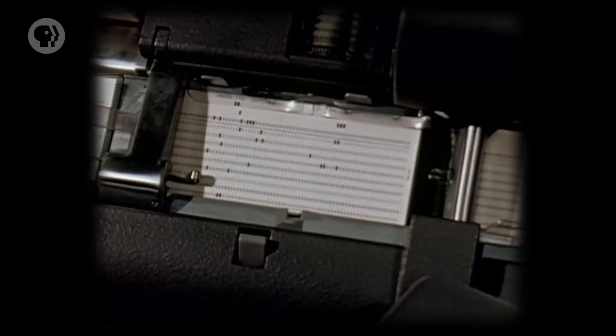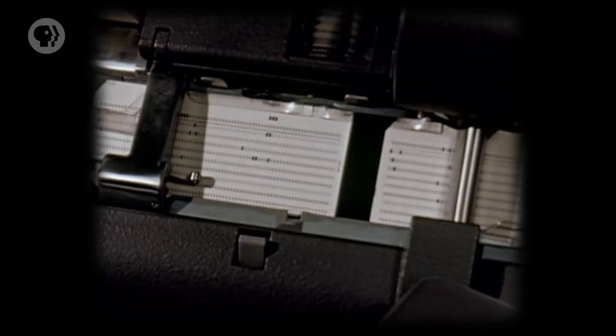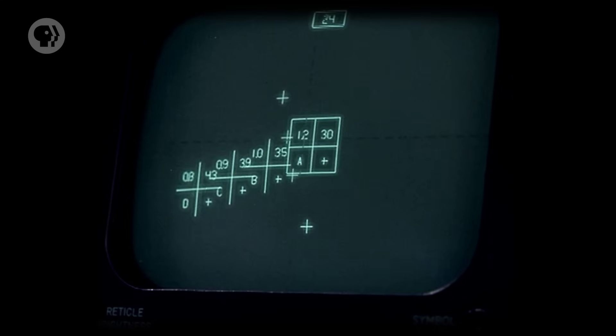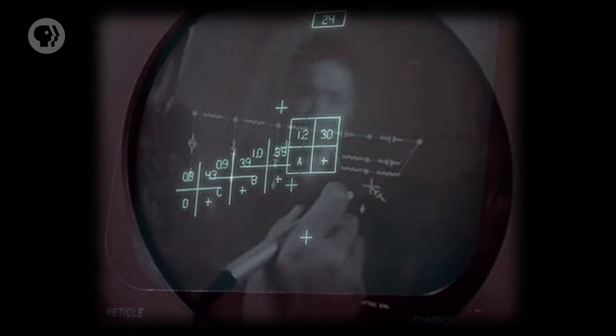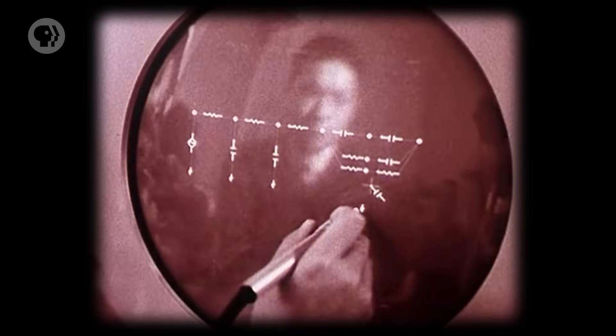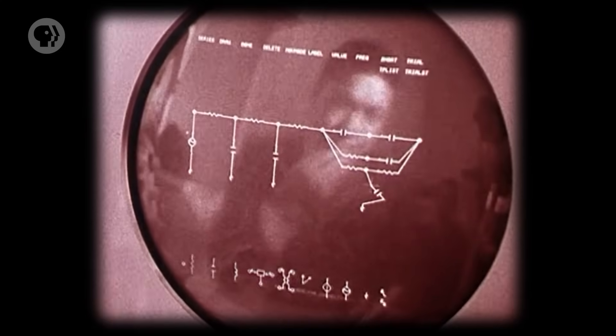Computer screens were rarely considered for program output — instead, any results from a computation were typically written to paper, or some other more permanent medium. But screens were so darn useful that by the early 1960s, people started to use them for awesome things.